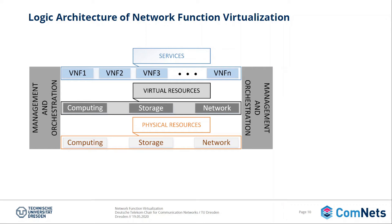Let's analyze the logic architecture of network function virtualization. The upper layer contains all virtual network functions which represent the services. These functions rely on virtual resources that are assigned to them dynamically according to network conditions. These resources can be grouped into three main categories: computing, storage, and network.